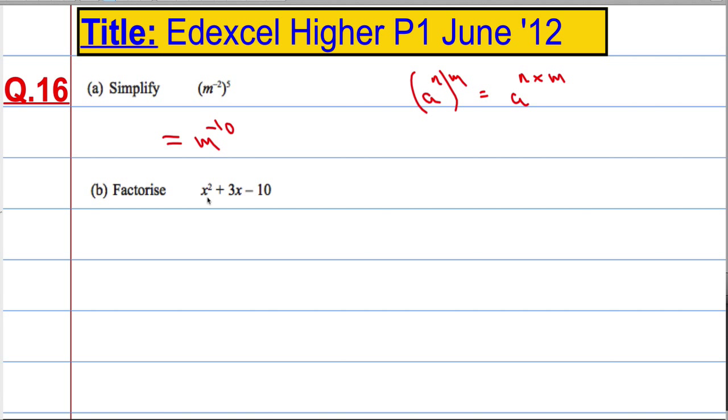OK, next part, factorize. We've got a squared term, you've got just x to the power of 1 here and then a constant at the end. So your general quadratic, you should be able to spot these a mile away hopefully.